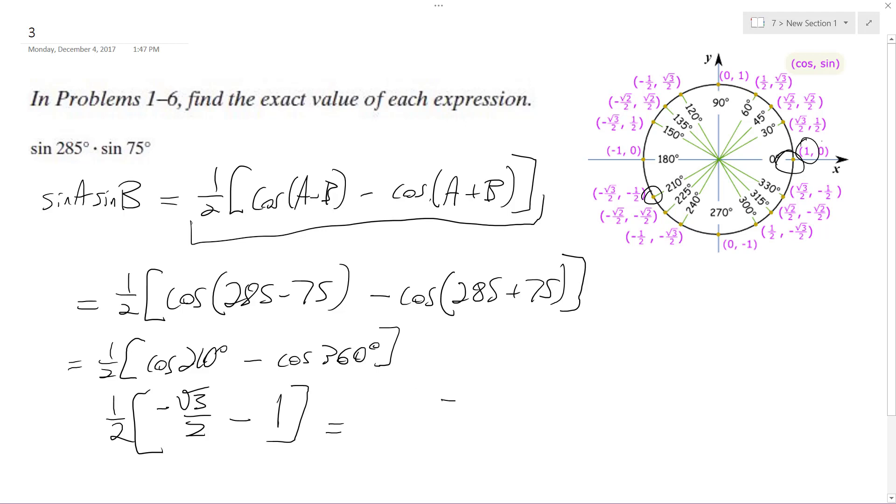Or I can multiply it through to get negative root 3 over 4, and combine with a common denominator minus 2 over 4. Because one-half times negative 1 gives negative one-half, and I write that as negative 2 over 4 so they have the same denominator. Okay, that's it. I hope this helps. Thanks for watching.